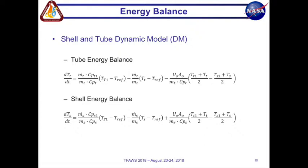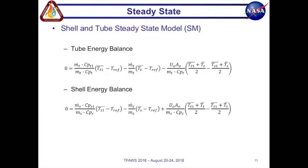And since we have a dynamic model we can derive a steady state model by setting our derivative terms to zero. And the nomenclature for this one for our steady state terms we put a bar on top and the other values are just constants.